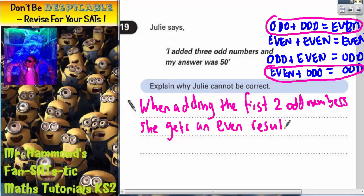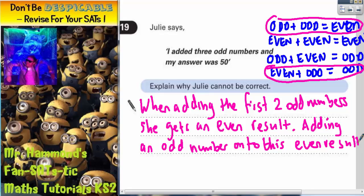Adding an odd number onto this even result gives an odd answer. So 50 is not odd, so she cannot be correct.